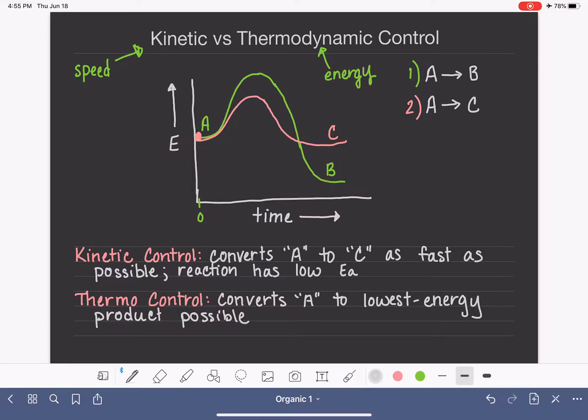Lowest energy products, as you know, are the most stable products. And they are always going to be more stable than the products we get when we run under kinetic control.